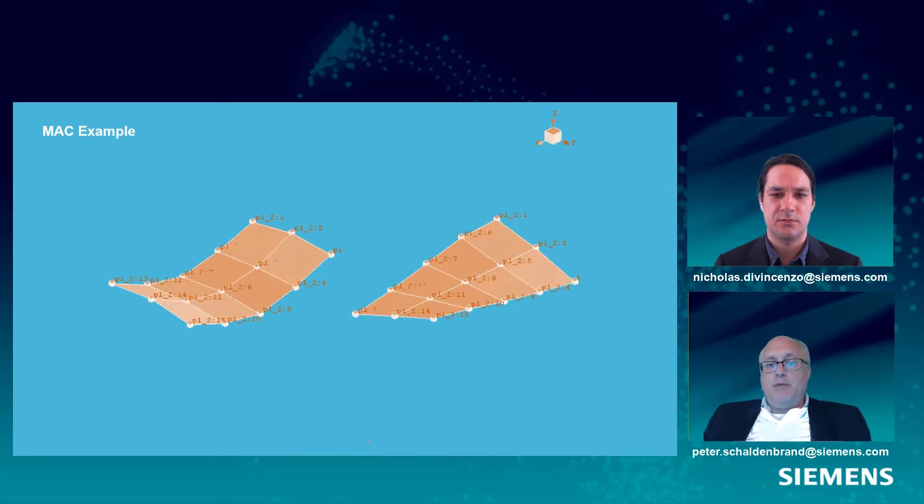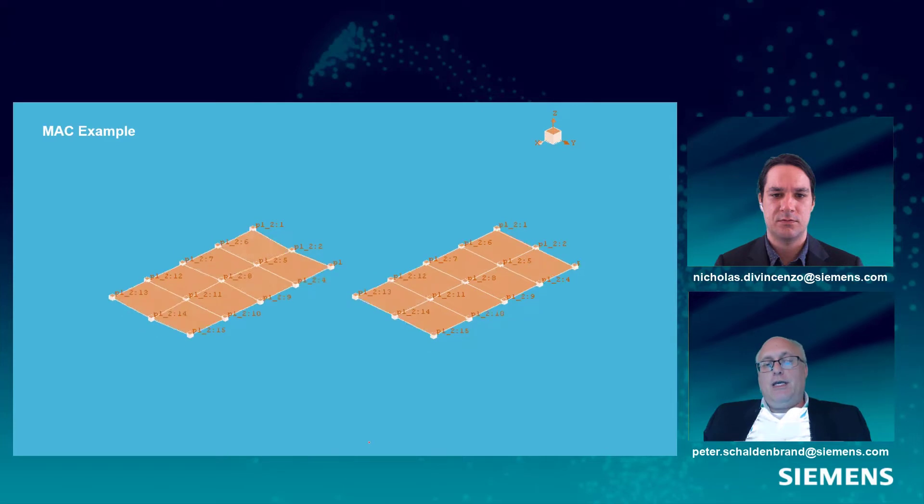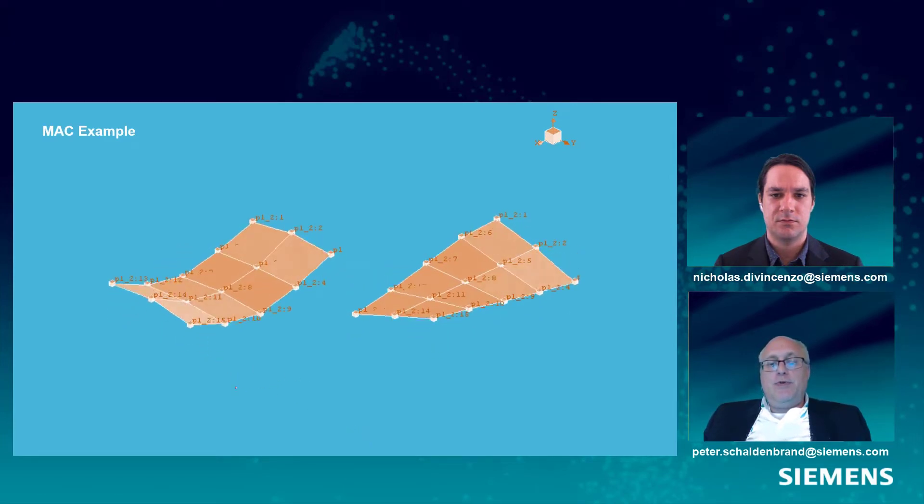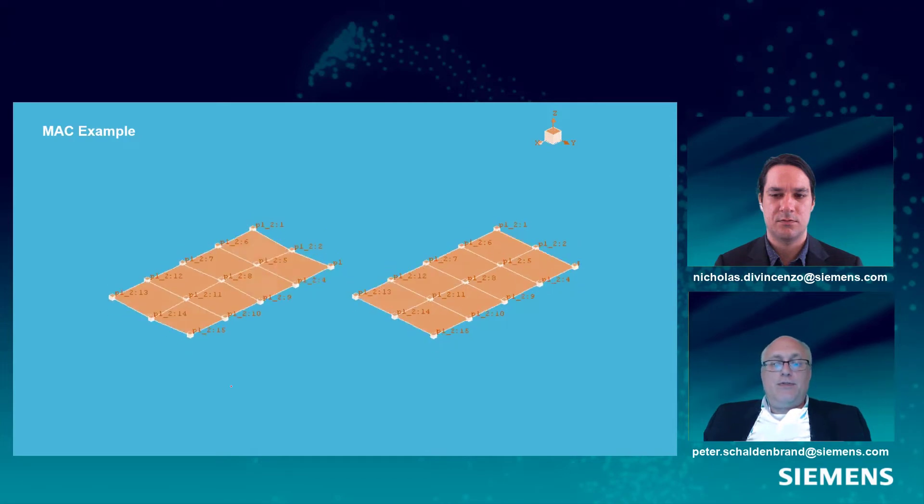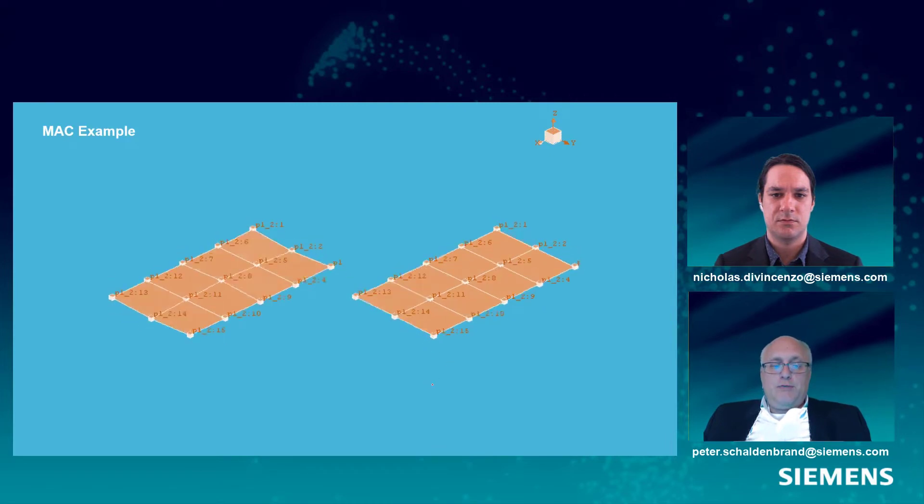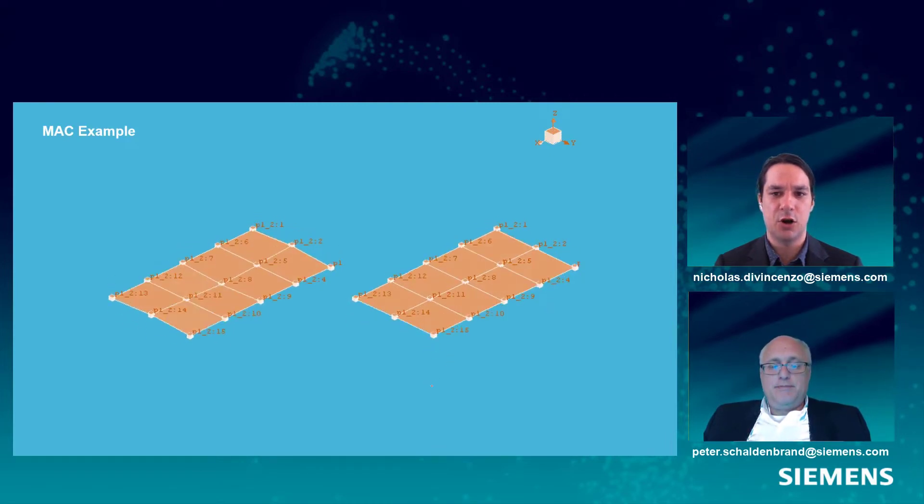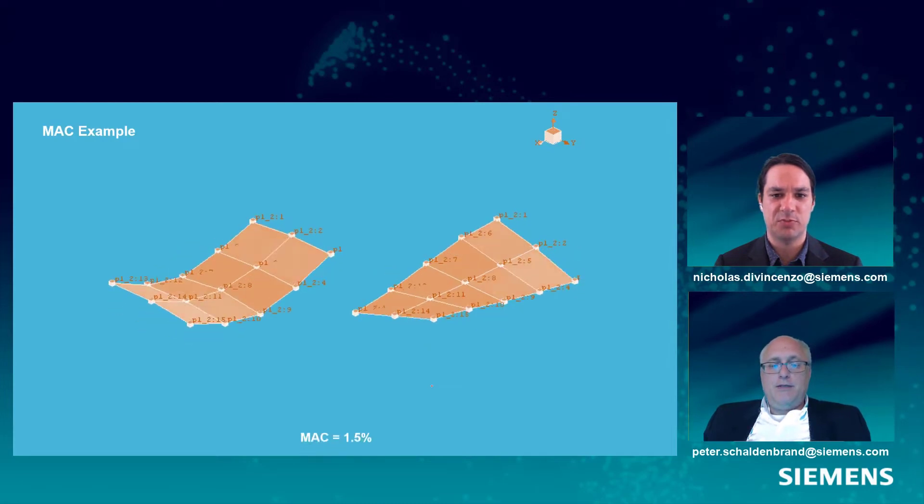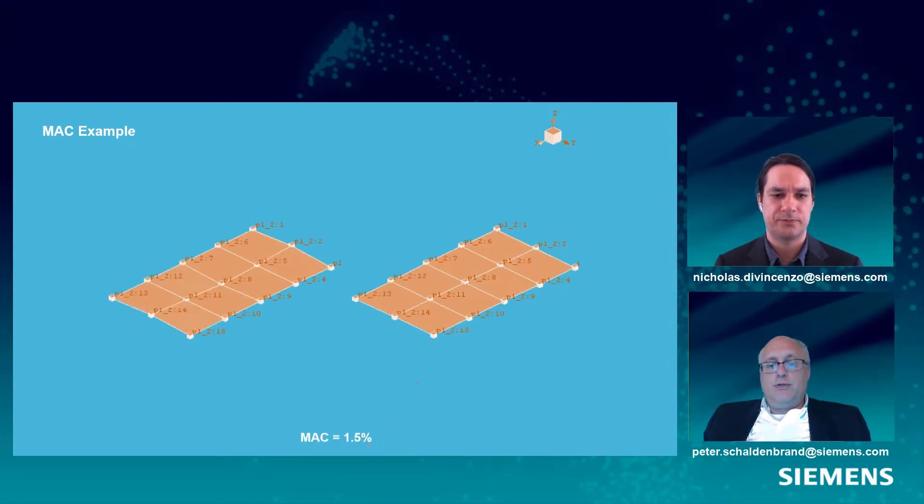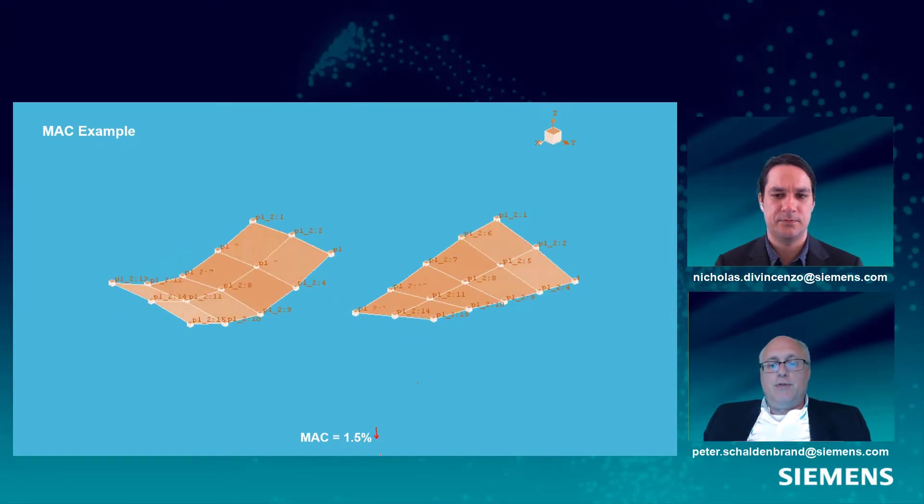Now, sometimes the points might be moving differently. And again, you have to kind of do this on an average basis. But if they're moving differently, if they're orthogonal, so to speak, not moving the same, what would the MAC be for these, would you guess? I expect it to be very low, you know, maybe a couple percent. Yeah, much closer to zero, right? So low.